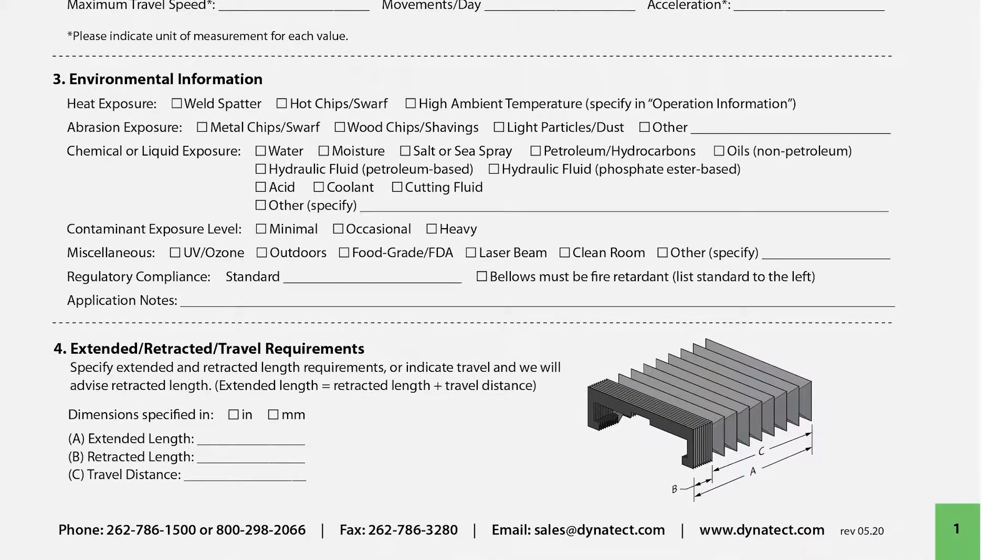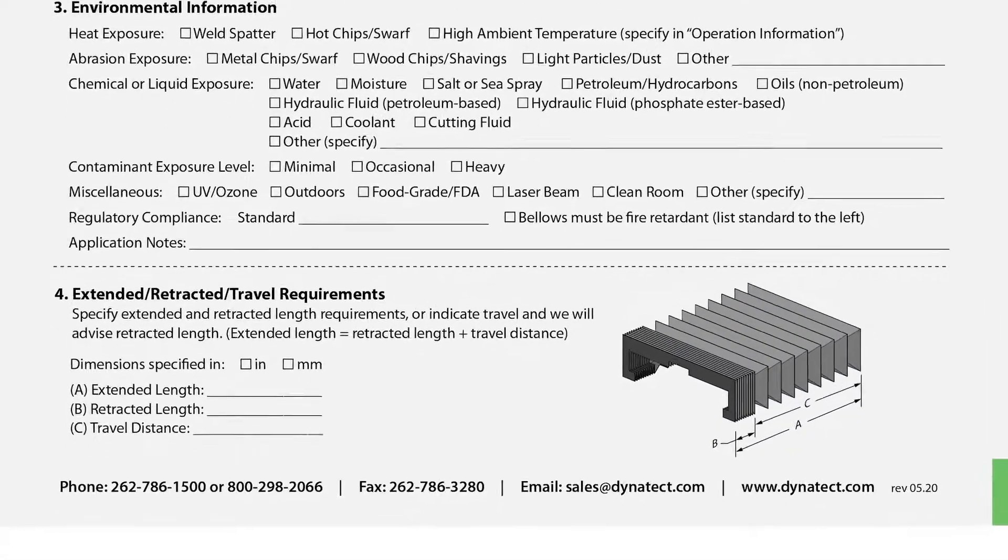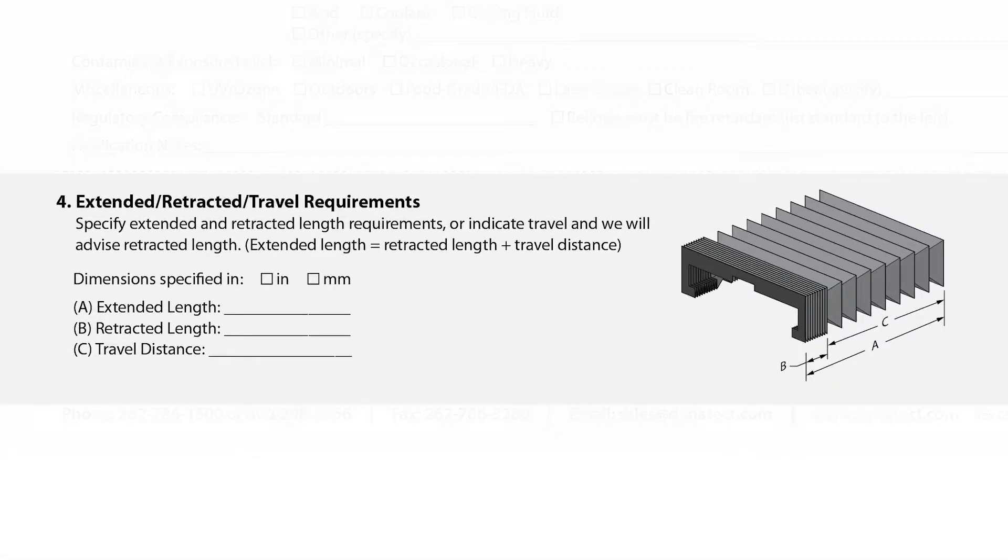Section 4 calls for your extended and retracted length measurements. This gives Dynatech the design constraints and requirements needed toward designing the correct bellows for your machine.